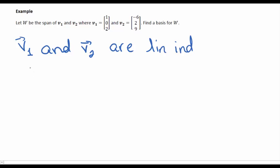The other question is, do they span W? Well, by definition of W, they also span. So we define this space W to be the span of these vectors. So V1 and V2 do form a basis.